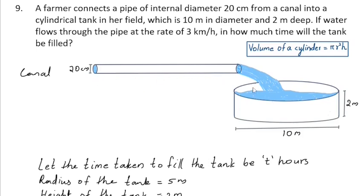This is the cross section of the pipe connected into the tank. The length of this cross section is 3 km, which is equal to 3000 m.